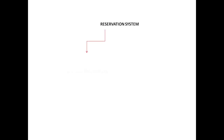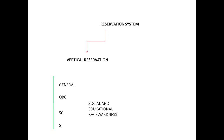During the framing of the Constitution, the reservation system was classified as one type: vertical reservation. Vertical reservation is given to people who have social and educational backwardness — those who did not get justice in the pre-constitution era. These people were classified as ST, SC, OBC, and General, and the reservation is based on social and educational backwardness.